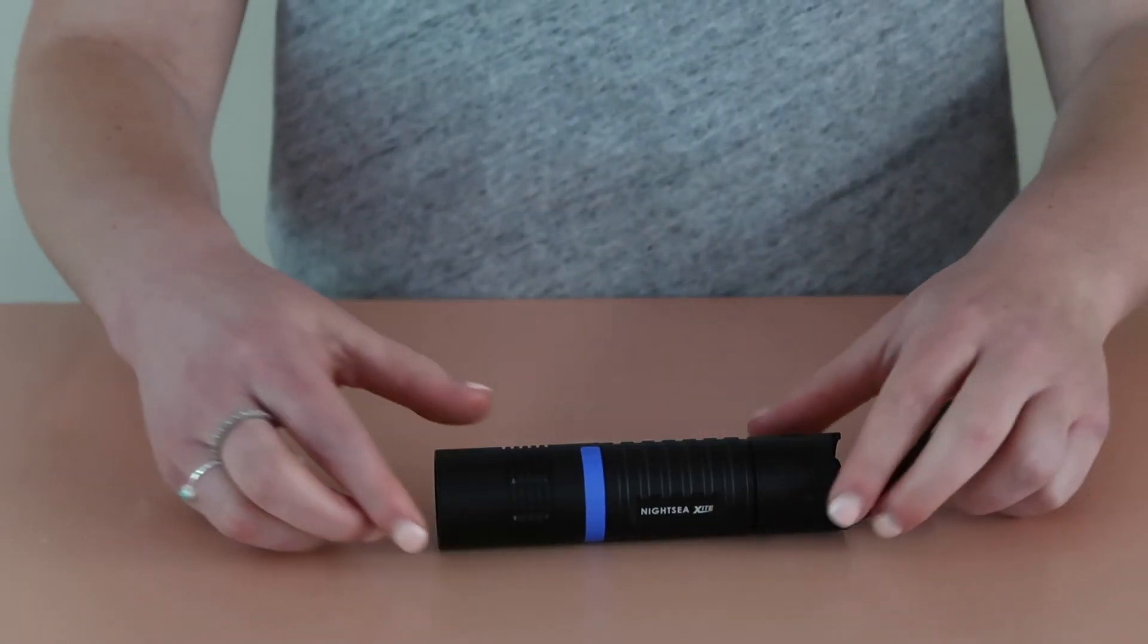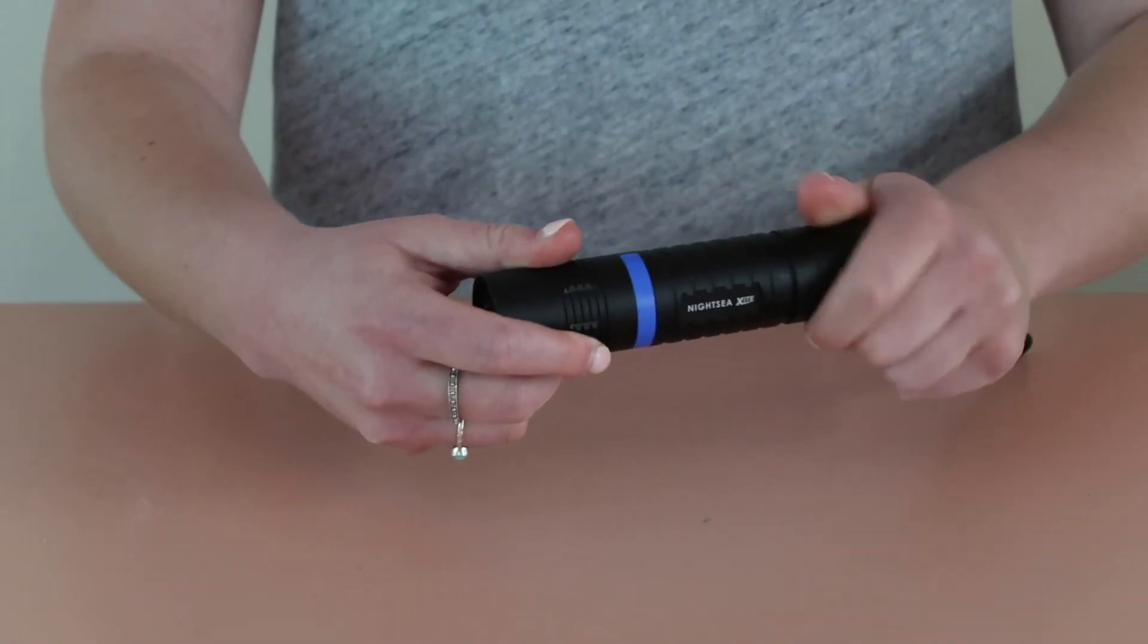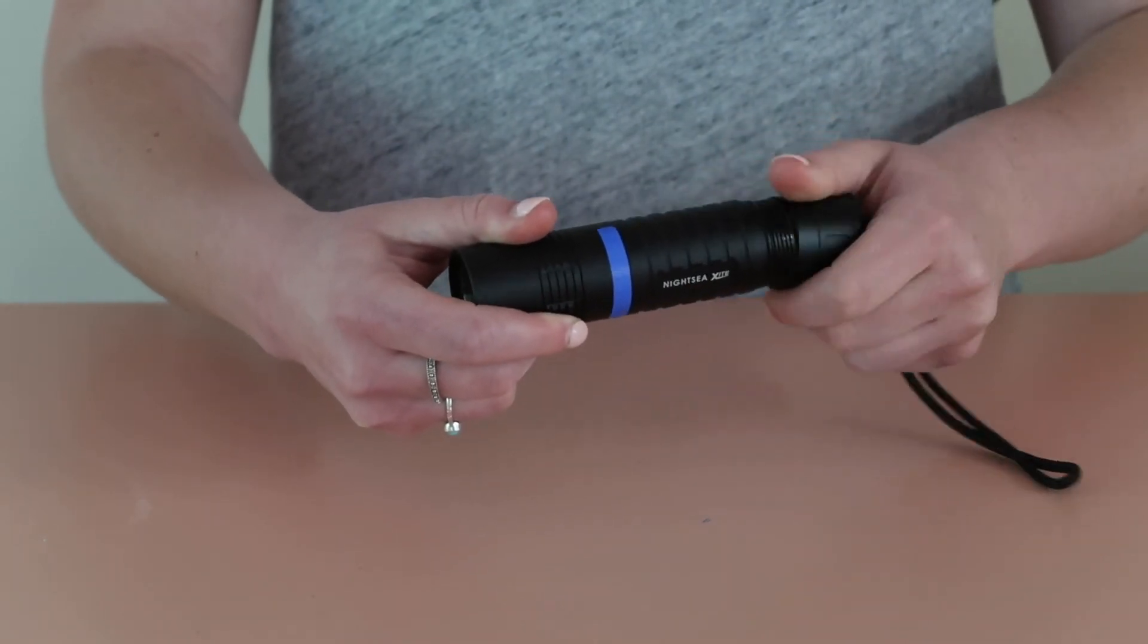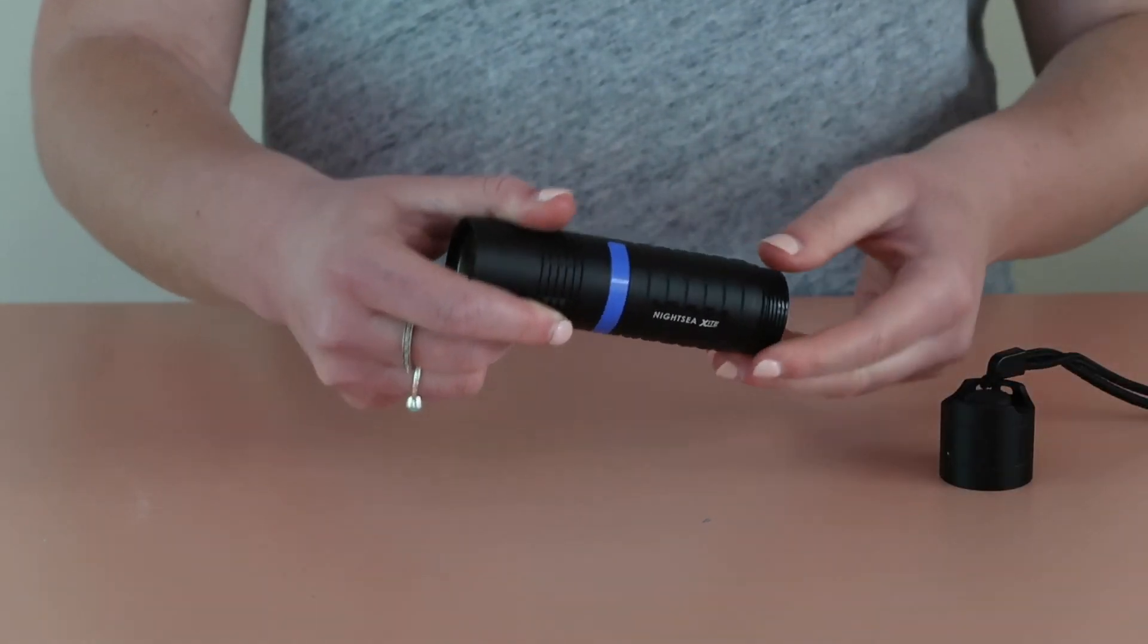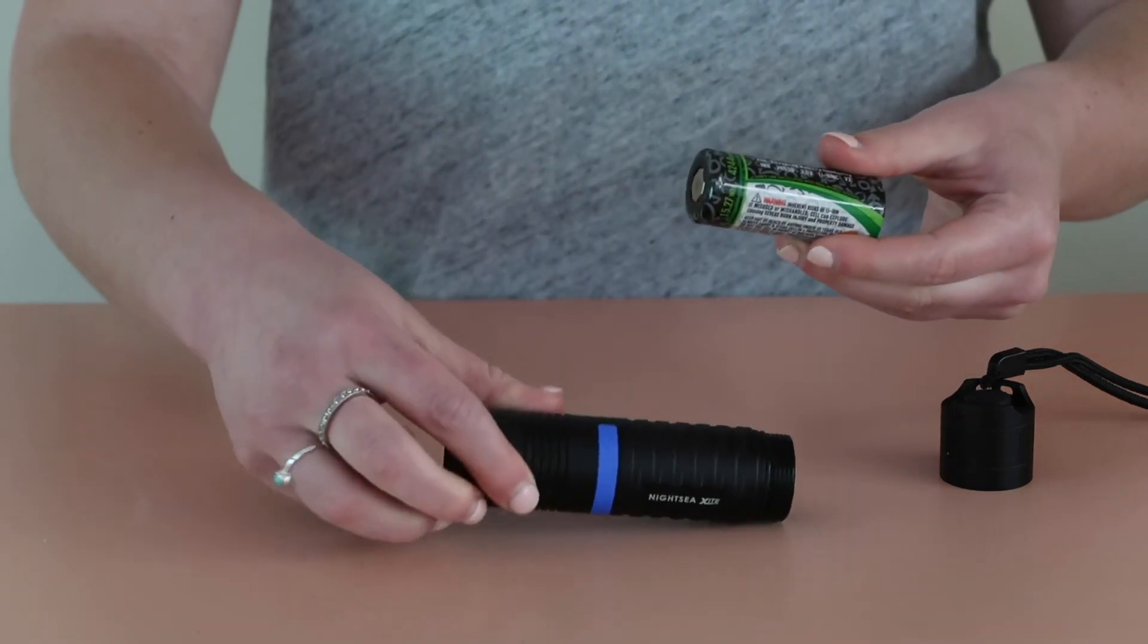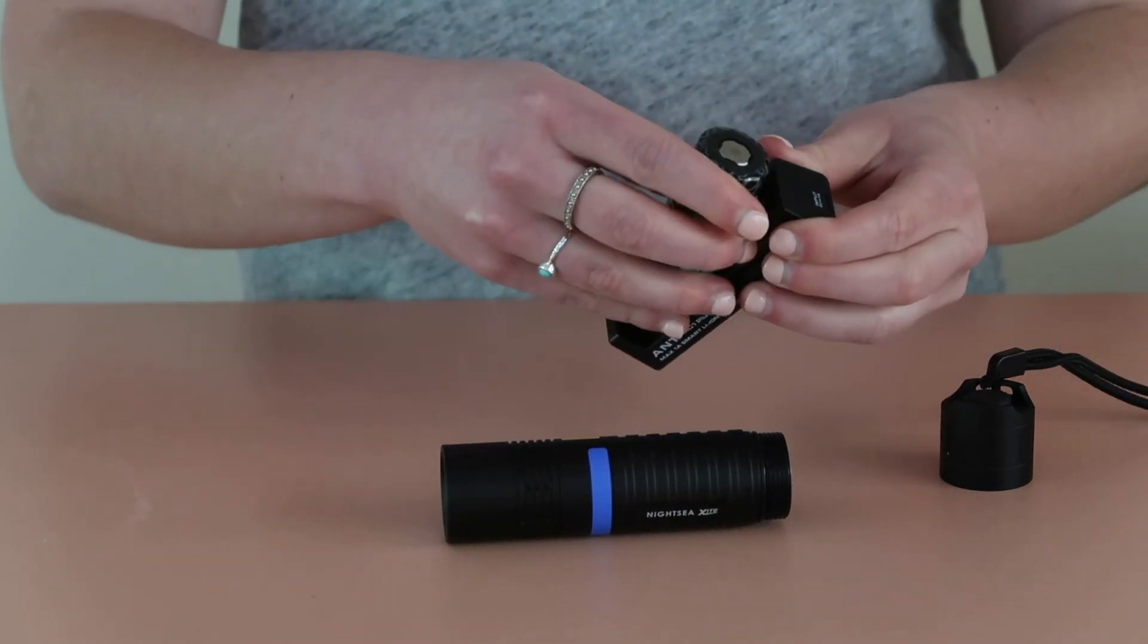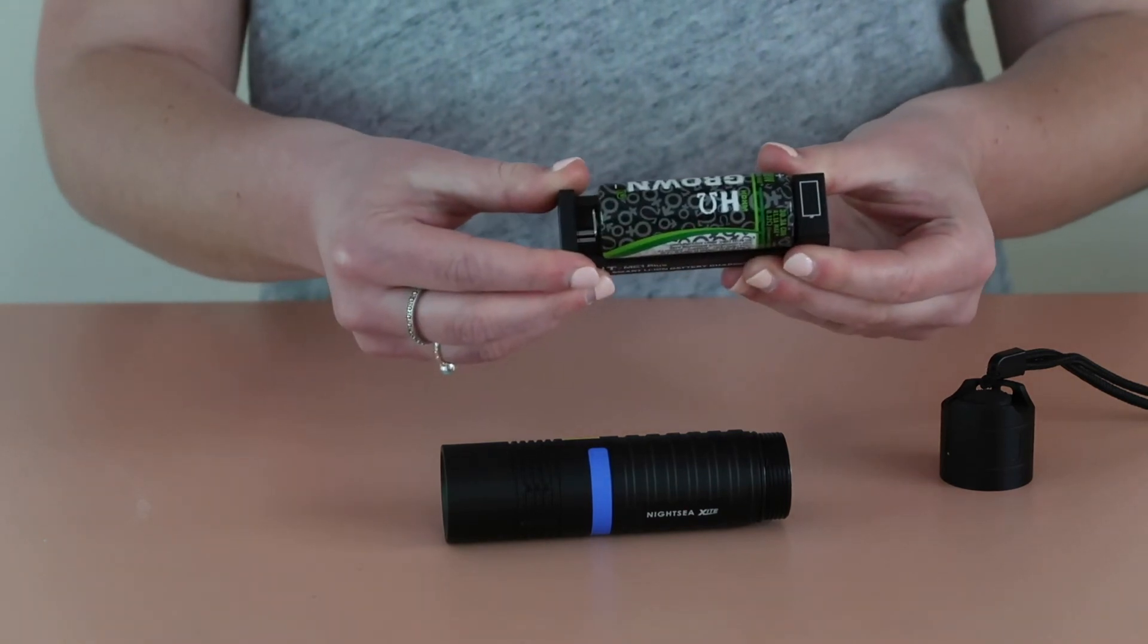To remove the battery for charging, unscrew the tail cap. The Exite uses a rechargeable lithium-ion battery. If the voltage gets too low, the light will go into a reduced power mode and blink slowly. You should definitely recharge then, but it's not a bad idea to charge the battery after long periods of use.